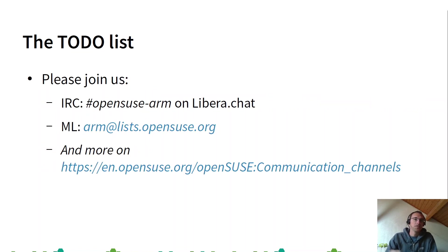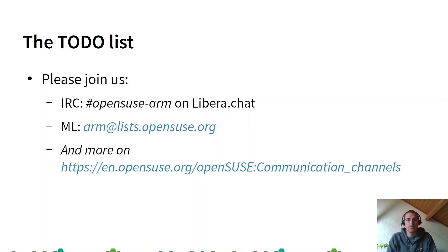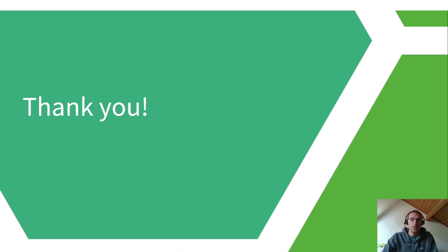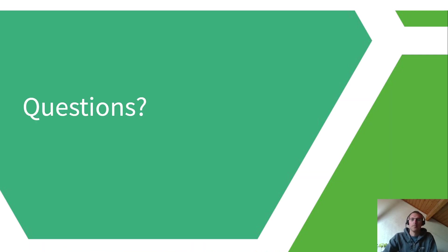If you want to join us, you can use IRC — we have the opensuse-arm channel on libera.chat. We have the mailing list arm@lists.opensuse.org, and there are even more communication channels on the wiki. Thank you for your attention, and if you have questions I'm available to answer them.